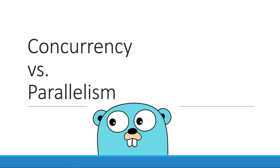Welcome back! I've been a little bit under the weather the last couple days so please pardon the voice. In the next couple videos we're going to take a look at Go routines, and to fully utilize Go routines we're going to need to know the difference between concurrency and parallelism. Concurrency is dealing with many things at the same time, while parallelism is doing multiple things at the same time.